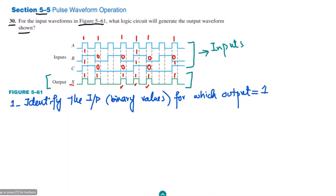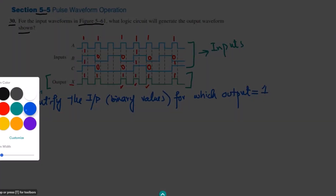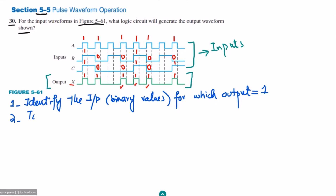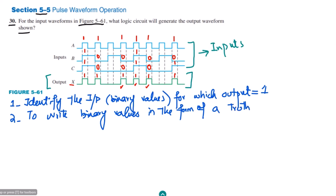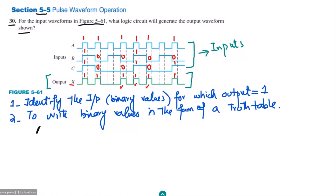After identifying the combinations, Step 2 is to write the binary values in the form of a truth table. So let me write them. We have columns A, B, C, and X as the output. The first combination is 1, 1, 1, and for it the output is 1.